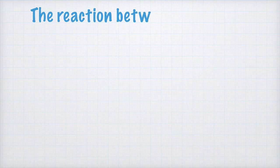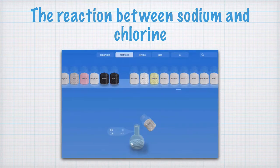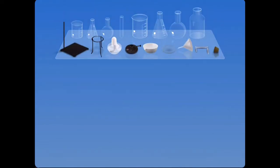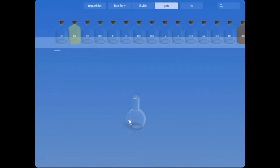To do this, I'll first run a small simulation. This is a free app called Chemist that I have downloaded to my iPad. In the simulation, I can first choose what kind of materials to use, so I produce a small flask here, which I fill with chlorine gas by choosing from the gases on this shelf.